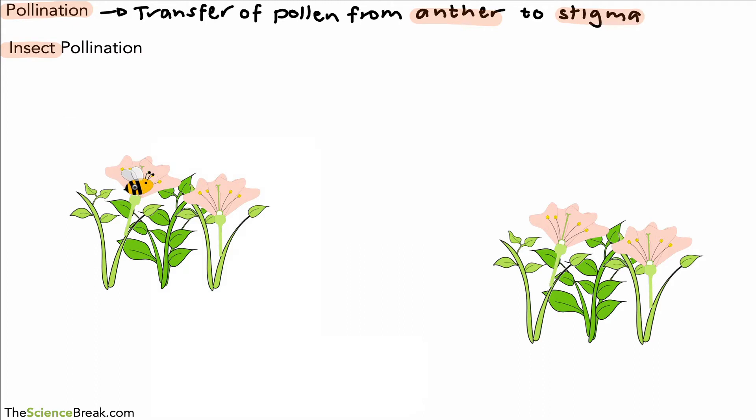The bee will come along attracted to a flower by the petals, the colorful petals. It will go in and collect some nectar, maybe fly around a little bit more, and then go to another flower to collect some more nectar attracted by the petals.